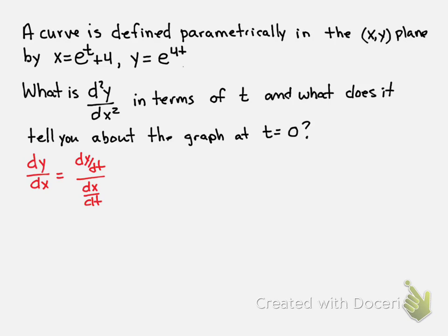So dy/dt will be 4e^(4t) using the chain rule, multiplying by the derivative of the inner function, and dx/dt will just be e^t.